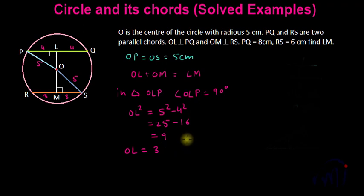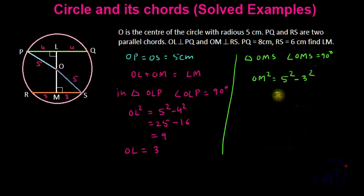And similarly if I talk about triangle OMS where angle OMS is 90 degrees, from here OM square can be written as 5 square minus 3 square that is 25 minus 9 which is equal to 16. So OM is equal to 4.